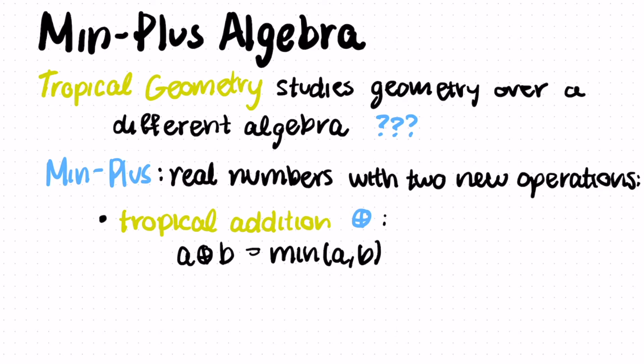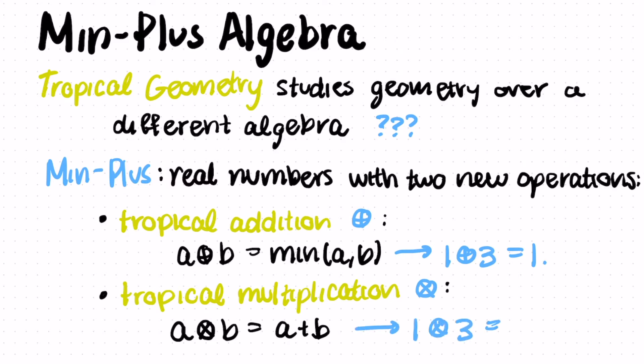So as an example, if we take one tropical plus three, we get as an output one. And then for multiplication, so our tropical multiplication is going to be old addition. So if we have a tropical times b, that's going to be a plus b. So as an example, if I take one tropical times three, then I get four. So this is the new algebra that we're going to use for tropical geometry.